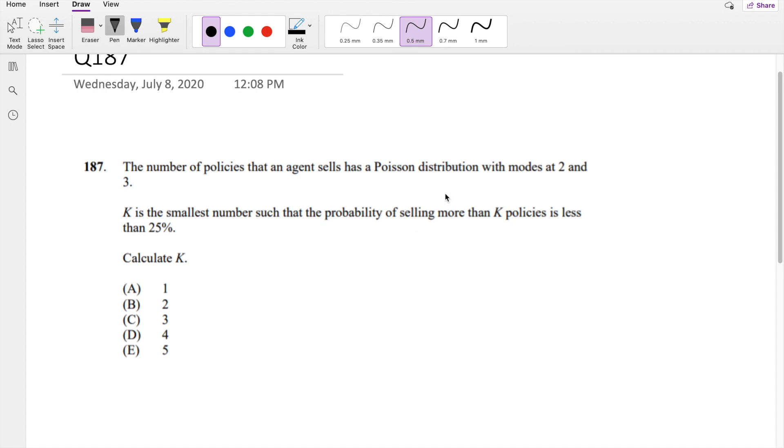We know the Poisson distribution P(X=x) equals e to the negative lambda, lambda to the x, over x factorial. We're told the modes are at 2 and 3. Mode just means the probability is greatest there. Since both 2 and 3 are modes, they have the same value: P(X=2) equals P(X=3).